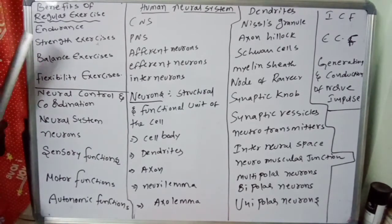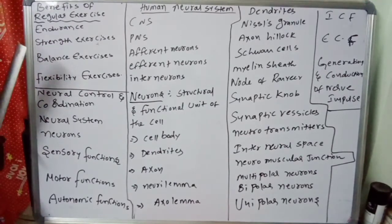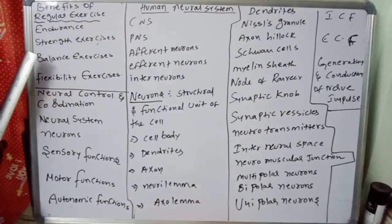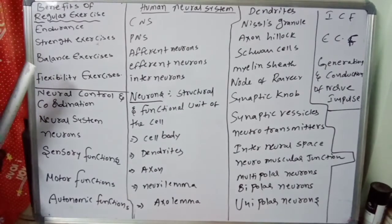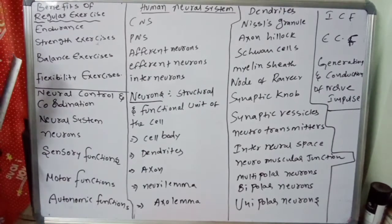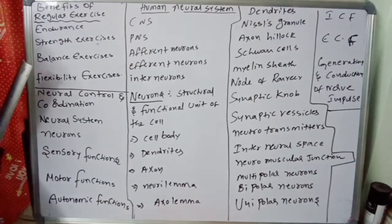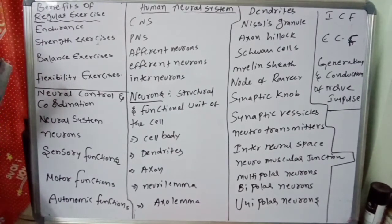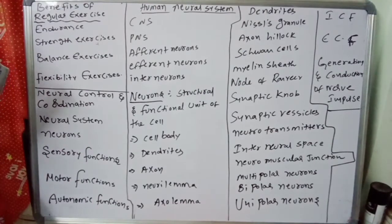Different types of movements include amoeboid movements, ciliary movements, flagellar movements, and muscular movements. Muscles include skeletal muscles, visceral muscles, and cardiac muscles. The skeletal system consists of bones and cartilages; we covered appendicular and axial skeletons, disorders, and the typical long bone structure including diaphysis, epiphysis, and membranes.